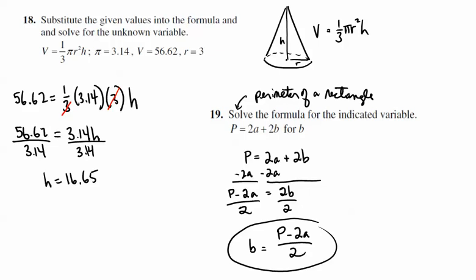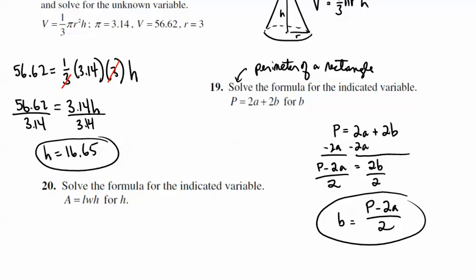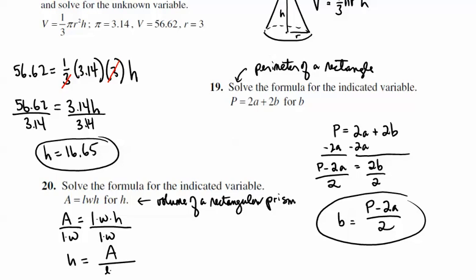And we'll go on to number 20. All right, for number 20, again, we're asked to solve area as length times width times height. That happens to be the formula for volume of a... It could be a cube, but more generally, it's a rectangular prism. And again, all we want to do, and we can do this in one step, if the area is length times width times height, we want to isolate the h. Just going to divide both sides by length times width. So h is equal to A over length times width. And we're done with that.